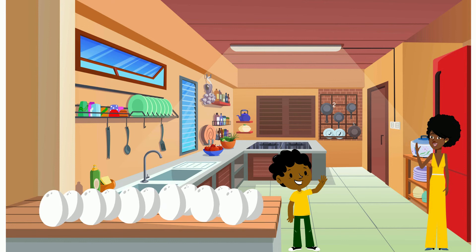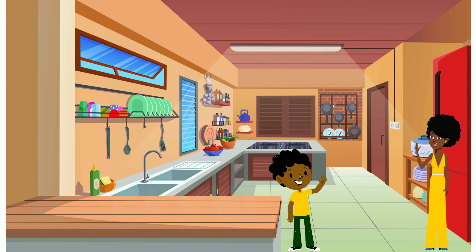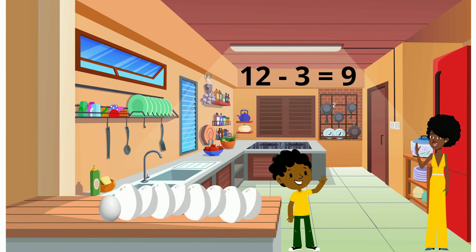There are 12 eggs in total. Jonathan had to crack three eggs, so there are nine eggs left on the counter. 12 take away 3 is equal to 9. Now let's make that into a fraction.